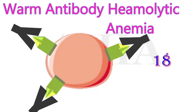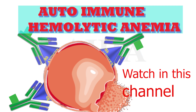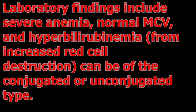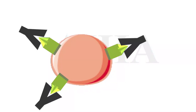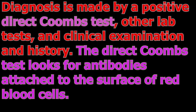Warm antibody autoimmune hemolytic anemia is the most common form of autoimmune hemolytic anemia. Half of the cases are idiopathic, without any known cause. The second half is secondary to another disease such as systemic lupus erythematosus or malignancy such as chronic lymphocytic leukemia.